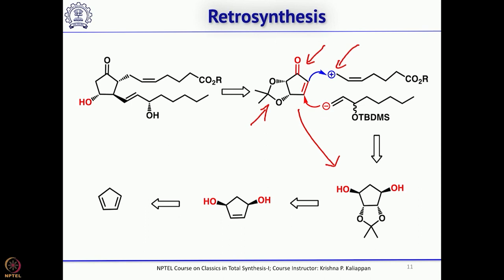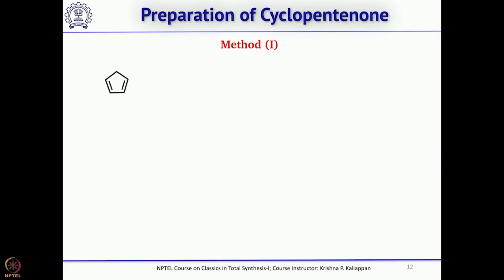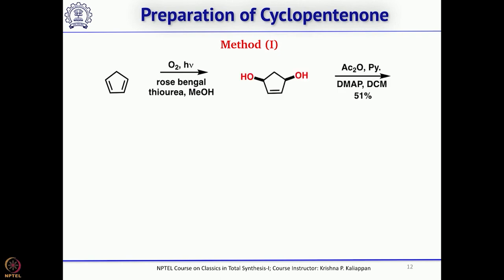Overall, all three syntheses discussed for the total synthesis of prostaglandins started with a 5-membered ring compound — commercially available cyclopentadiene (available as the dimer, which must be cracked by retro-4+2 cycloaddition to give cyclopentadiene). For Carl Johnson's synthesis, there are two ways to prepare the chiral starting material. The first method is similar to Gilbert Stork's: a 4+2 cycloaddition of cyclopentadiene with oxygen, followed by reduction of the O-O bond with thiourea to get the diol, which is then protected as the diacetate.